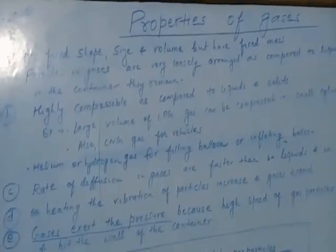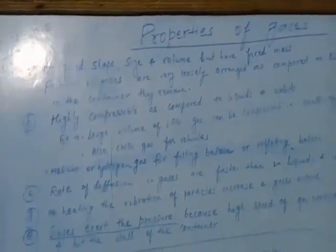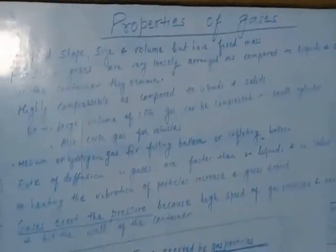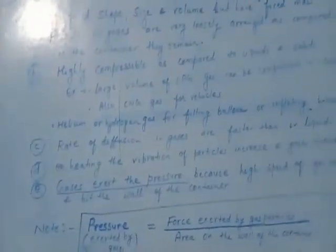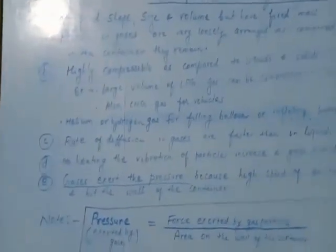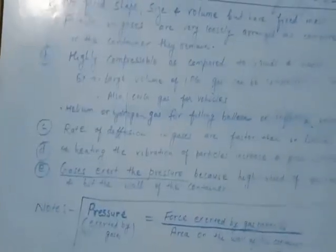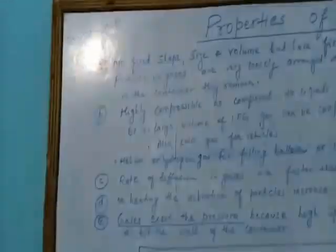Next are the properties of gases. Gases have no fixed shape, size, and volume but they have a fixed mass. This is because the particles in gases are very loosely arranged compared to liquids and solids, so they are not rigid. For example, if LPG gas is filled in a gas cylinder, the volume of LPG gas equals the volume of the gas cylinder. If we release all the LPG gas in a room, it occupies the whole area of the room.